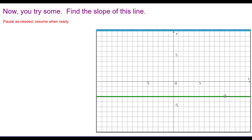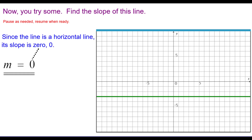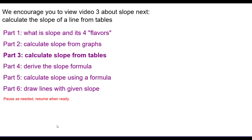And the last one: find the slope of this line. Since the line is horizontal, its slope is the number 0 — as it is for all horizontal lines. We encourage you to view video 3 about slope next, which is calculate slope from tables. This is the end of the video.